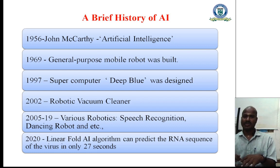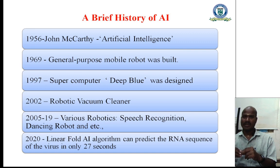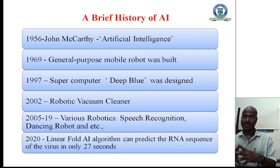In 1956, John McCarthy — the father of artificial intelligence — coined the term 'artificial intelligence.' Then in 1969, a general purpose mobile robot was built and introduced. Then in 1997, a supercomputer named Deep Blue was designed and introduced. In 2002, a robotic vacuum cleaner was introduced in society.